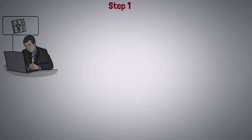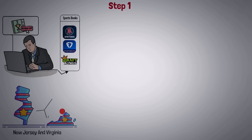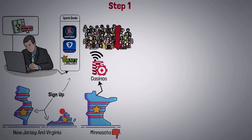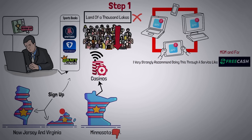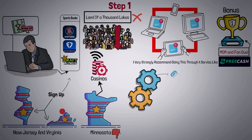For step one, we need to sign up to sports books. Depending on your state, you may have many sports books available or very few. New Jersey and Virginia, where I live, are two states where you can sign up to any sports book you want, and Minnesota is the worst — the casinos there are blocking legislation that would make online sports betting legal. For everyone else, you can download sports apps on your phone or desktop, but I very strongly recommend doing this through a service like Free Cash. On Free Cash, for example, you can join MGM and FanDuel and receive a financial reward for doing so. So comb the sports books on Free Cash or a similar service like Swagbucks and download as many as you can afford to fund with your freeloader income.